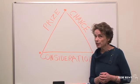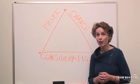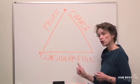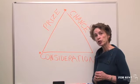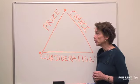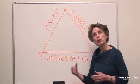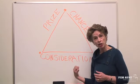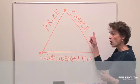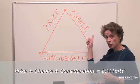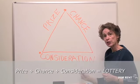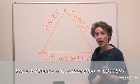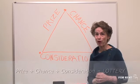Once you cross the line and incorporate all three elements of the triangle into your promotion — where people are going to get a prize, but they really have to do something to have a chance at that prize, and it is all about chance and not the best submission that wins — you now have a lottery, and that can be a problem.